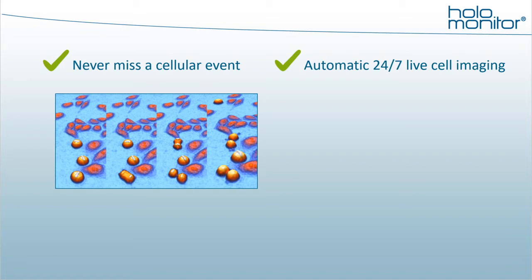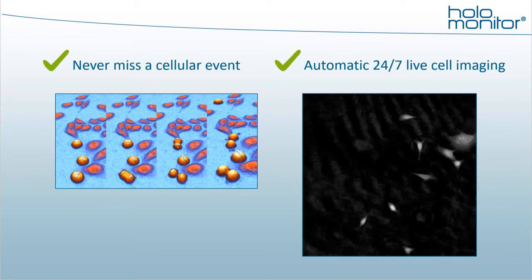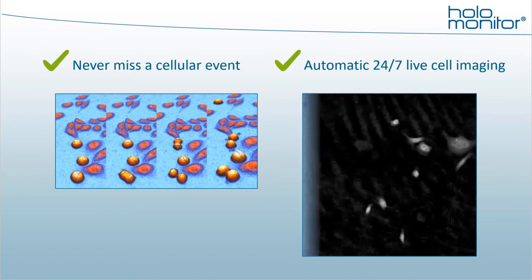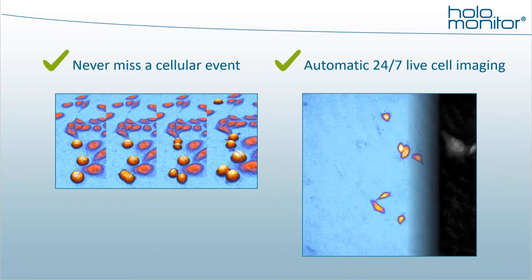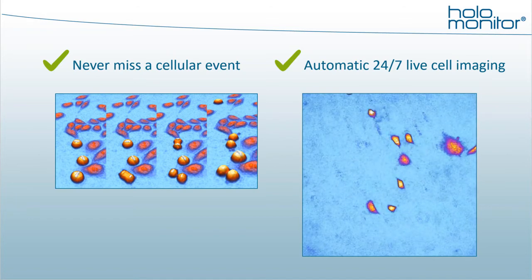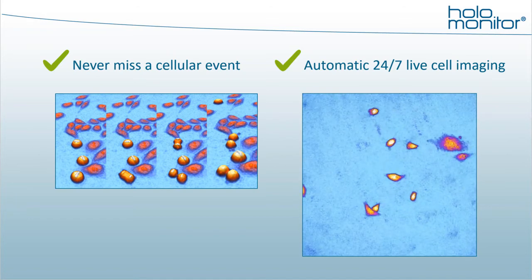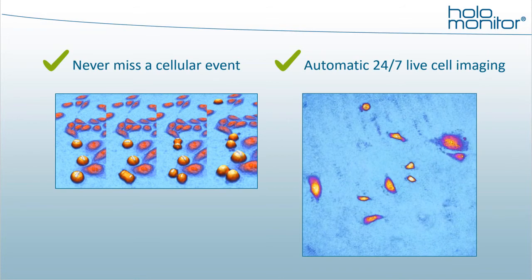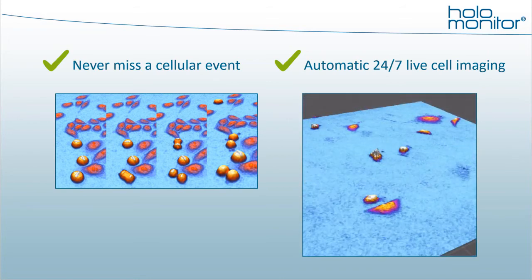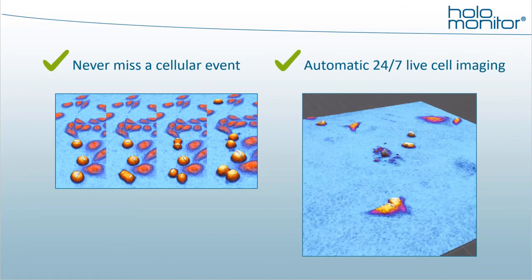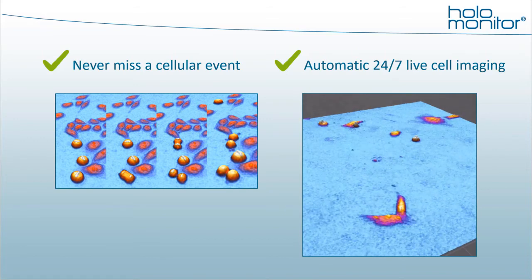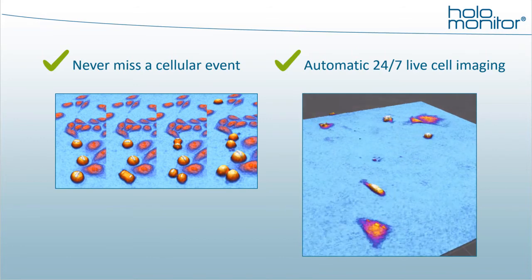Unlike traditional methods, you don't need to handle the cell sample at each imaging time point. This imaging system is working for you automatically. Your live cell TV doesn't have to be just black and white. Holomonitor uses digital holographic microscopy to reconstruct 3D images of the cells in the software. No cellular labels are necessary for this technology, making it non-invasive and cell friendly.